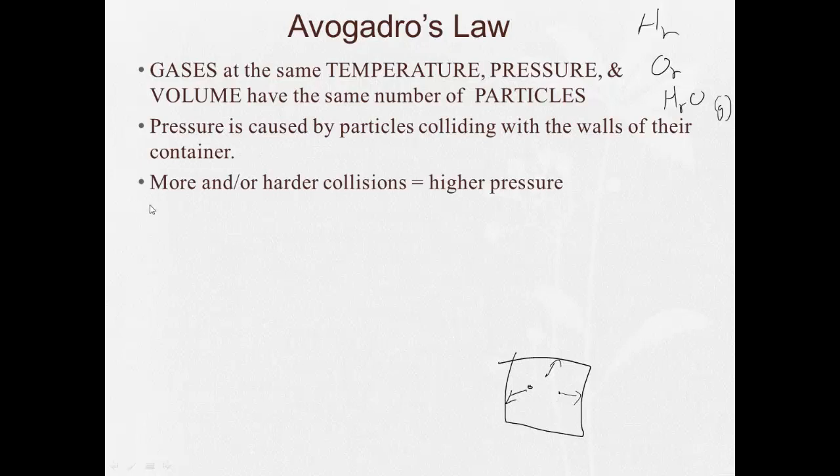The more collisions and harder collisions are going to yield or lead to higher pressure. Things like lower volume and higher temperature also lead to higher pressure. And for all of these, the opposite leads to lower pressure. So more collisions, higher pressure. Fewer collisions, lower pressure. Harder collisions, because they're moving faster, higher pressure. Softer collisions, lower pressure.